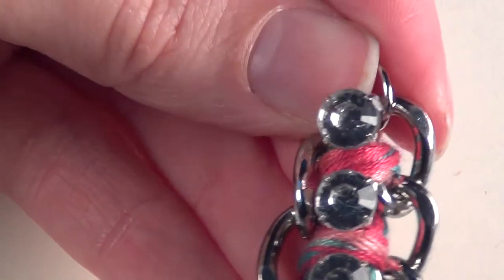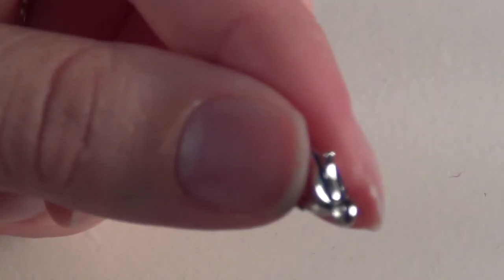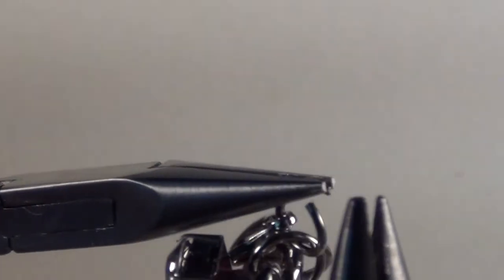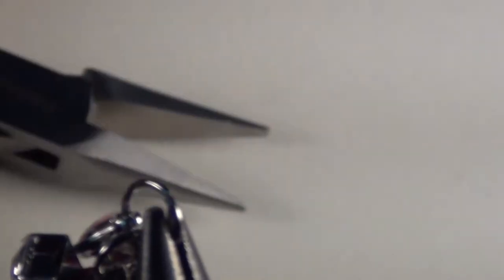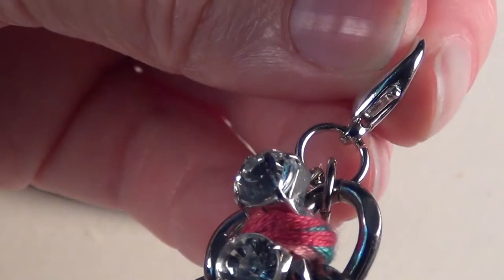So now you've got both ends of chain that have jump rings on them. Then you'll take one more jump ring, slip it through one side, then the other side, and then attach your lobster clasp to that. And close up that jump ring. Now you've got your lobster clasp on there.